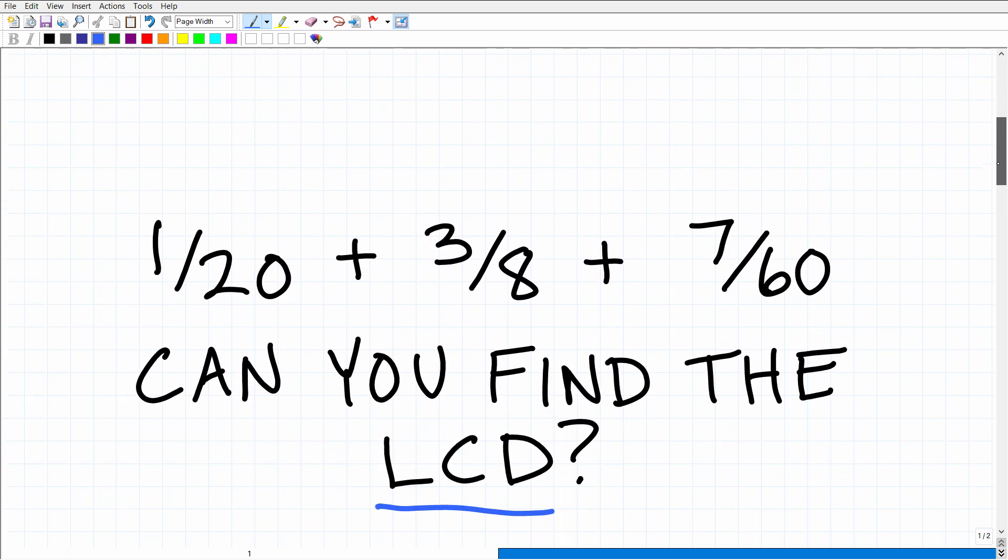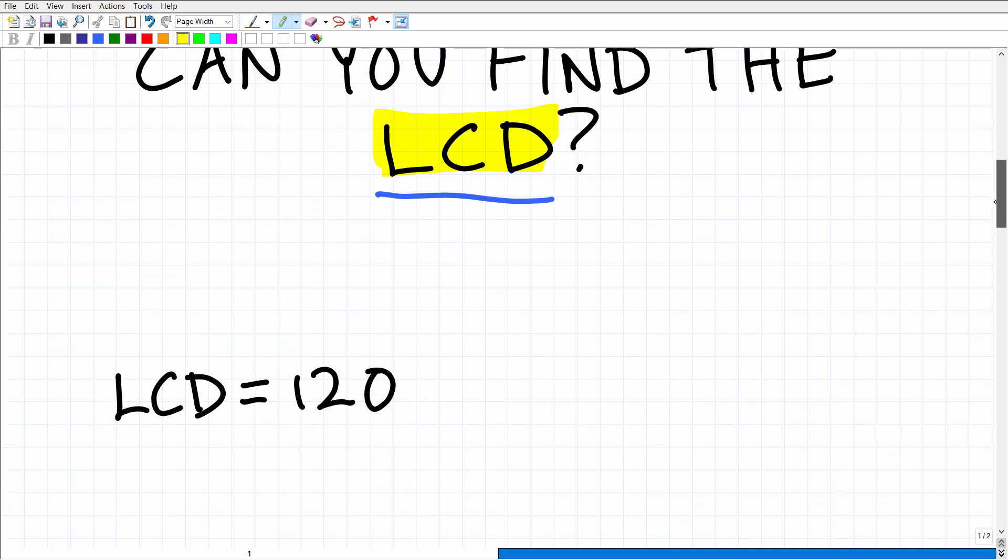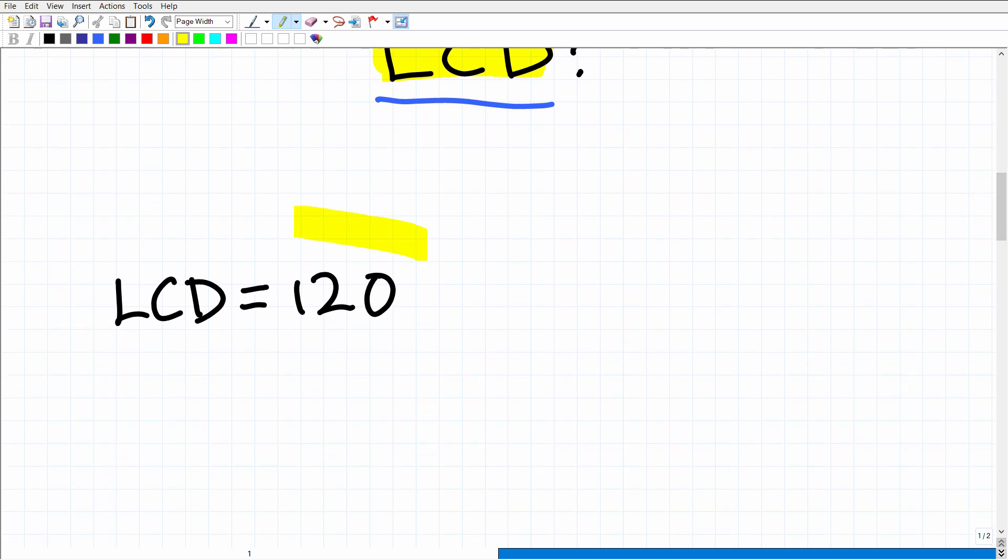So here we have three fractions. The question is not to find the sum. I'm not interested in adding these fractions up. I just simply want to know what is the lowest common denominator. All right, let's go take a look at the answer. The answer is 120. Okay, so that is the answer. Now, if you got the answer right, that is fantastic. So that's kind of like one part of the question.